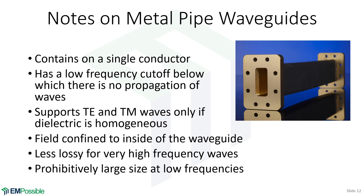For very low frequencies, while metal pipe waveguides would be low loss, they become very large and cumbersome — this is where transmission lines are preferred. So you can think of it as a sequence: for very low frequencies, use transmission lines; somewhere above 10 GHz, start looking at metal pipe waveguides; and then somewhere in the millimeter wave or terahertz range, we tend to transition to dielectric waveguides, although you can find all kinds of exceptions at all frequencies.